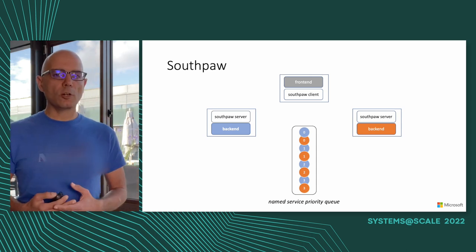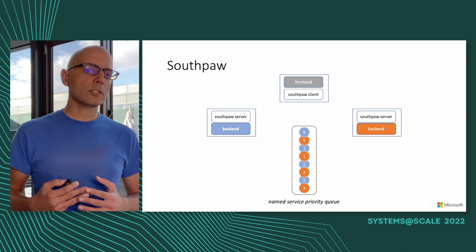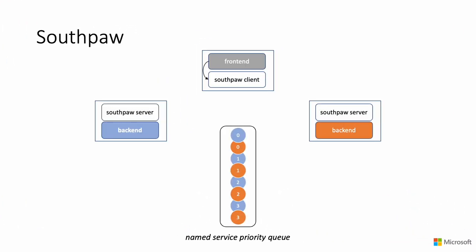When a front-end wants to make a call to one of the backends, it first calls its own Southpaw client. The Southpaw client contacts the distributed queue and pops a token for that service — always the token with the lowest priority. It then opens that token, finds the issuer's address or endpoint inside it, and uses that endpoint to make a call to the Southpaw server on the issuer's side, presenting the token it had obtained. The Southpaw server checks and verifies the token, then forwards the call to its backend. From that moment on, both Southpaw client and Southpaw server act as a completely transparent forwarding proxy.